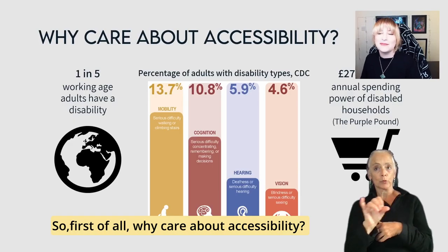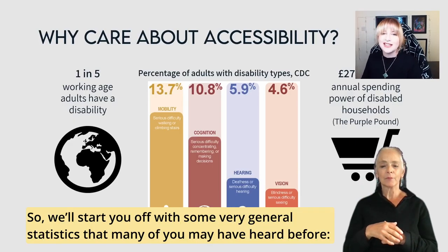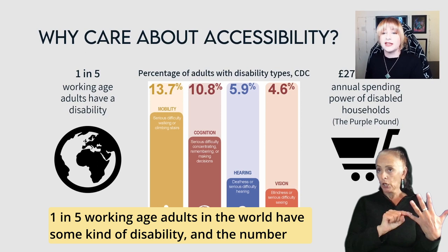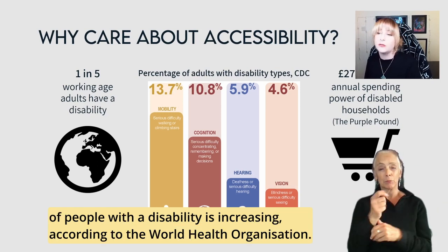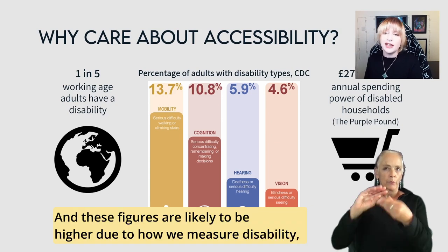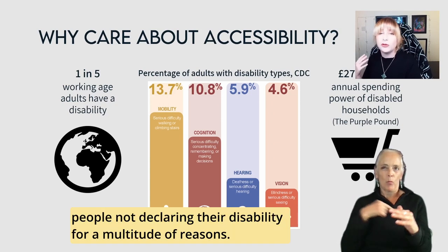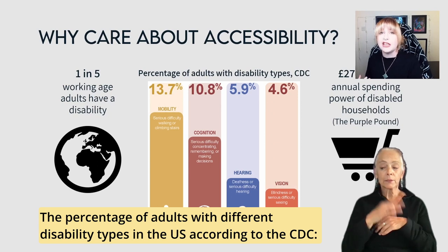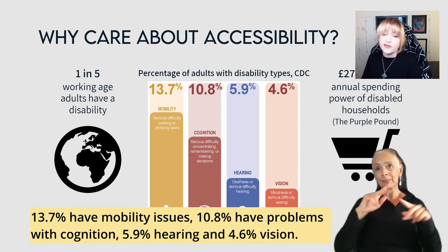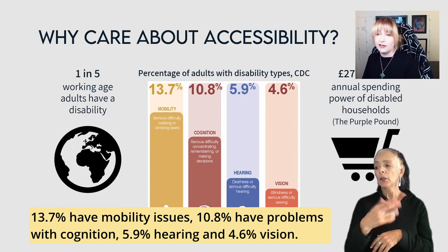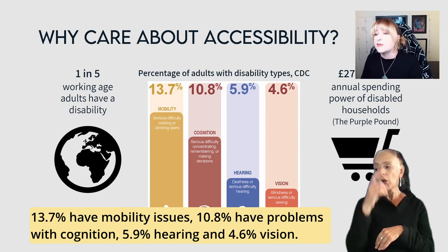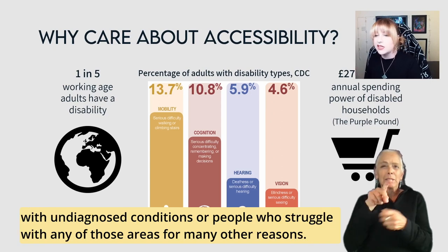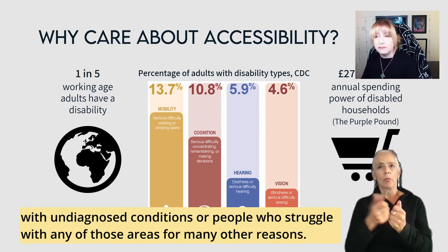So first of all, why care about accessibility? We'll start with some general statistics. One in five working-age adults in the world have some kind of disability, and that number is increasing according to the World Health Organization — and these figures are likely to be even higher due to how we measure disability and people not declaring their disability for a multitude of reasons. In the US, according to the CDC, 13.7% have mobility issues, 10.8% have problems with cognition, 5.9% hearing, and 4.6% vision.